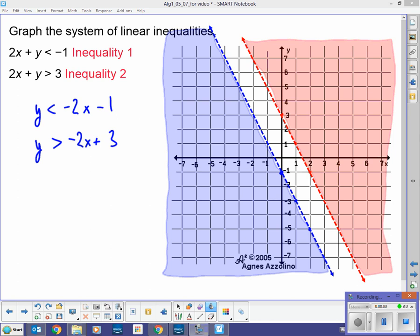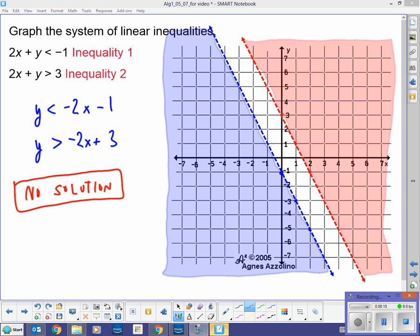So, there's no overlap area. So, if there's no overlap area, this is no solution. I think it's kind of our special case for graphing linear inequalities. Okay. So, those are two basic examples we have there.